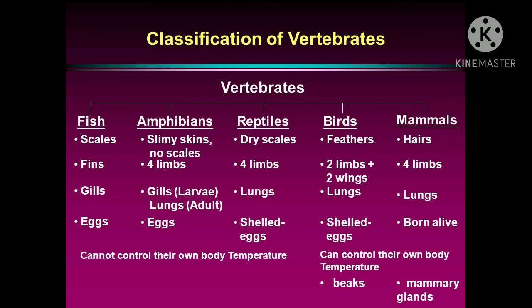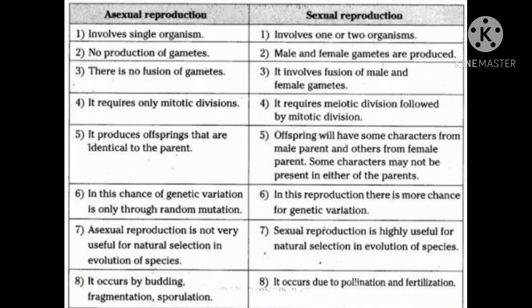In Asexual Reproduction, there is no chance of evolution because new characters are not produced in significant variety. In Sexual Reproduction, there is a high chance of evolution of species, because new combinations of characters are continuously produced across generations.